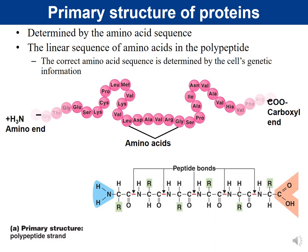Primary structure is simply the sequence of amino acids along the chain — reading from the N-terminus to the C-terminus. For example: glycine, threonine, glycine, glutamic acid, serine, lysine, cysteine, proline, etc. The correct amino acid sequence is determined by the cell's genetic information — DNA tells the cell which amino acids to assemble in which order.